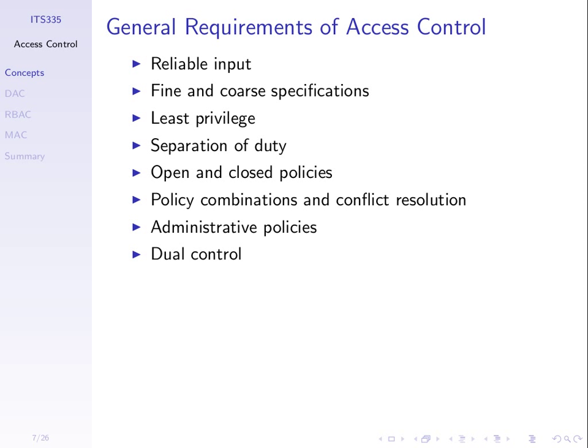Fine and coarse specifications are generally required. We should be able to say at a fine level that a particular user can access a particular file — on a very detailed level. At a coarse level, we should be able to say this set of users can access this set of files. Rather than specifying for every individual user and every individual file, we can do it at a coarse level — for example, allowing these 100 users to access any of these 1,000 files.